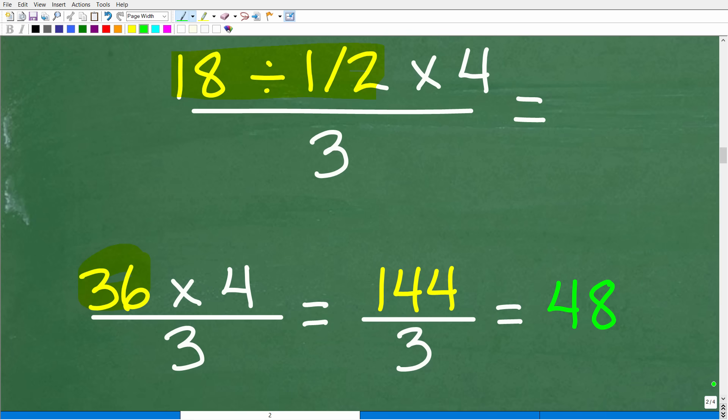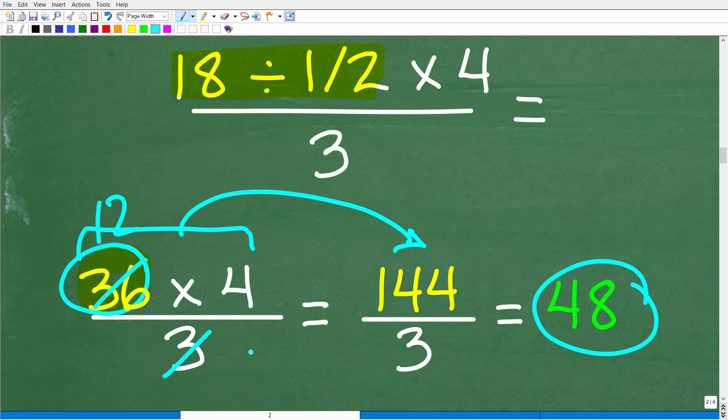Okay, so now the problem is 36 times 4 over 3. So we're clearly going to have to finish up our work in the numerator, right? So 36 times 4, I think I said 36 times 3. I apologize. But anyways, we have 36 times 4 is what? That's 144. So 144 divided by 3 is 48.